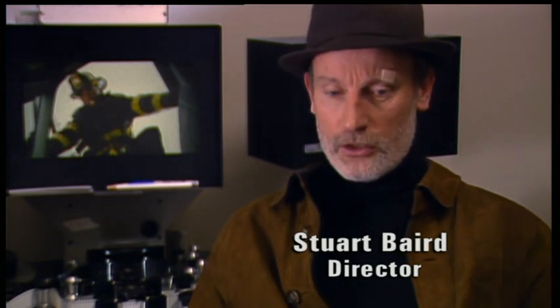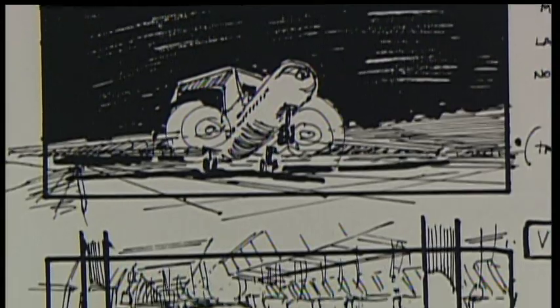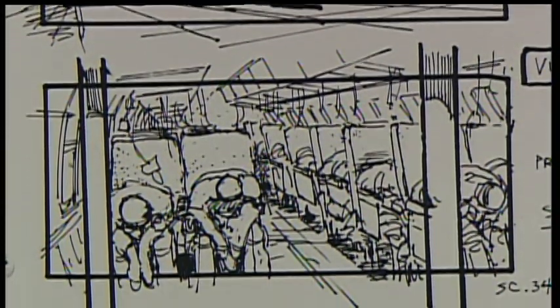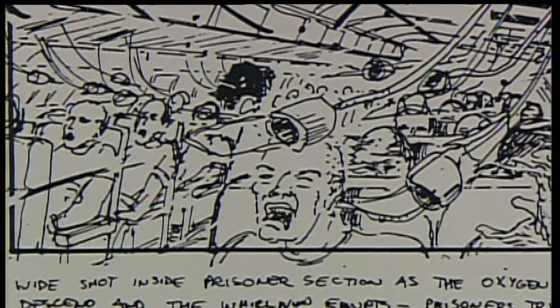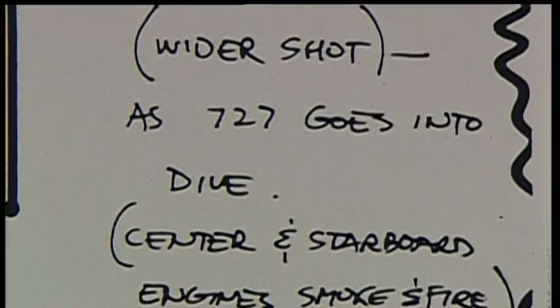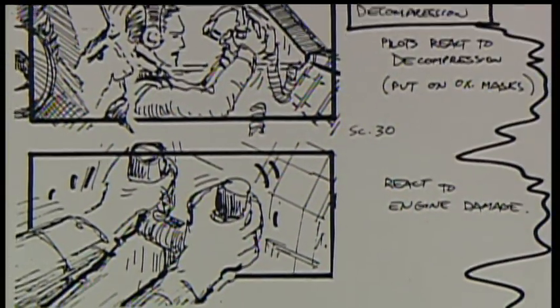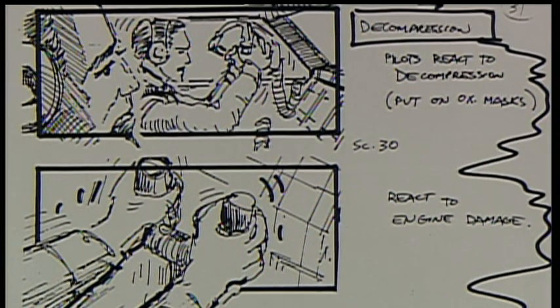Essentially what you do is you've got the storyline and then I get a storyboard artist. All the action beats I storyboard with a storyboard artist, Tom Southwell, who worked with me on Executive Decision. So everything is blocked out, what I want to see. But in the case of action sequences, they're particularly crucial. From these, all departments get a full idea of what my ideas are and the scale as well as the detail of these ideas.